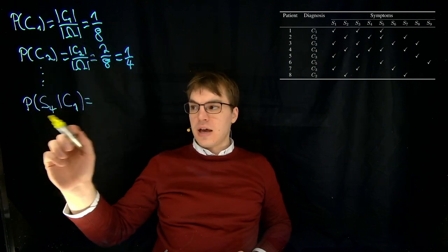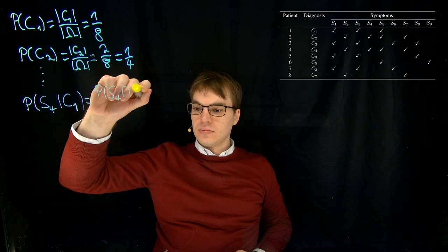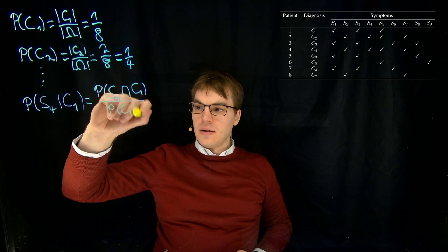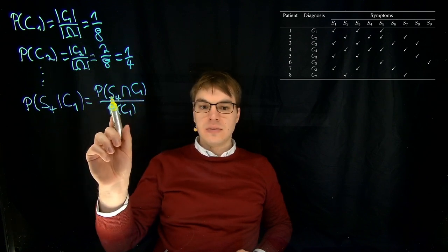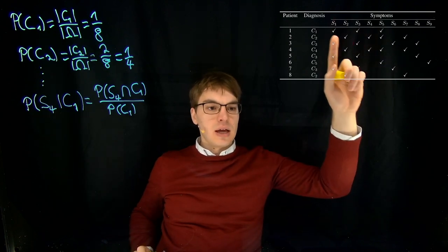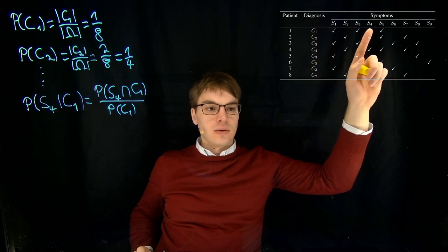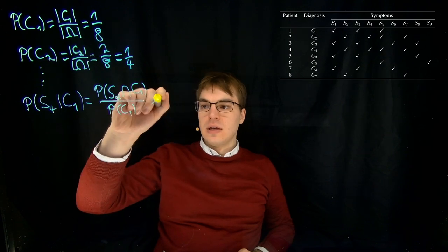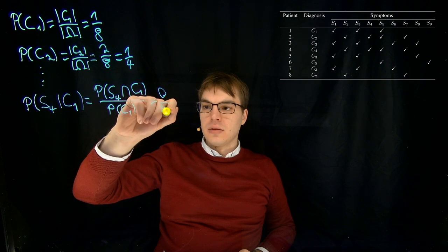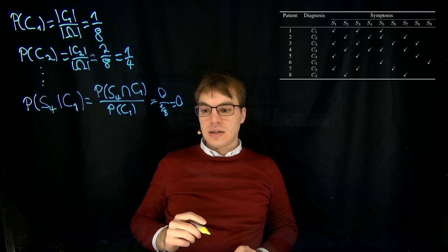And here we just apply the definition of conditional probability. So here we are asking for the number of times that we see both S4 and C1 occurring together in this table. And we can see that out of the one time where C1 occurs, S4 never occurs. So we get zero divided by one eighth, so just zero here, and so on.